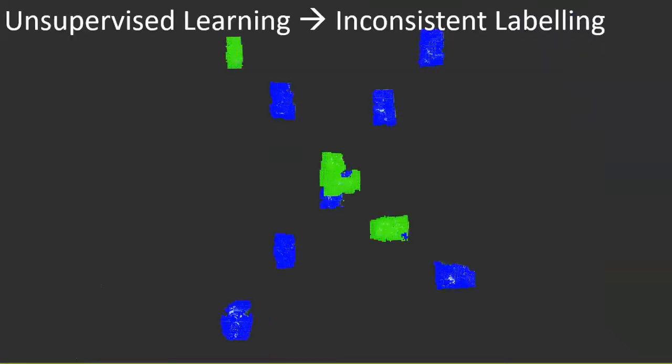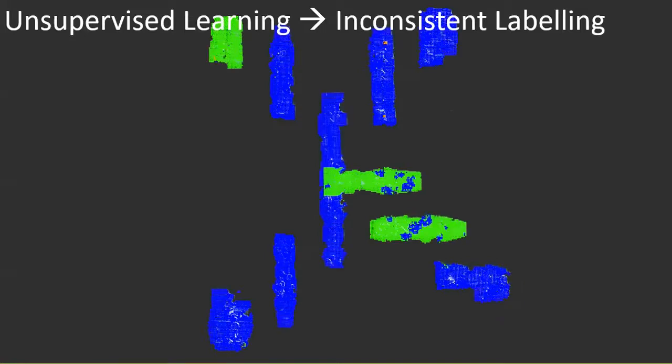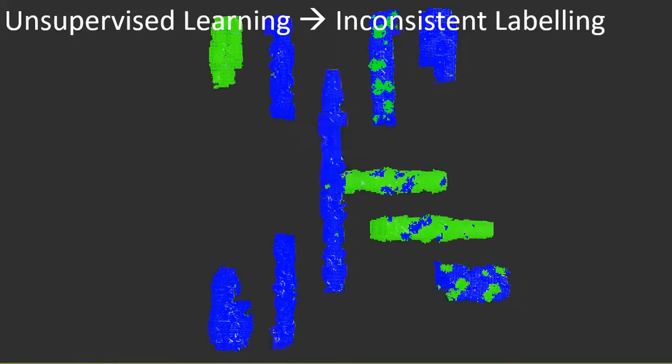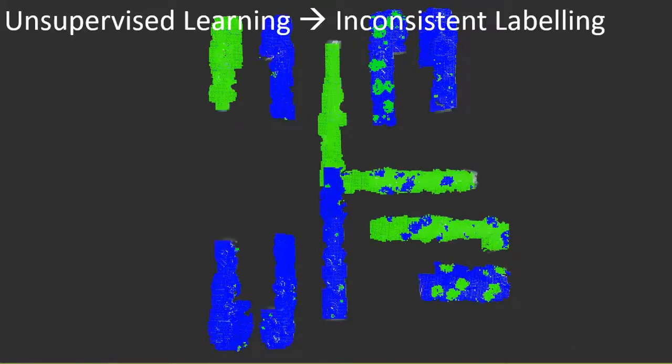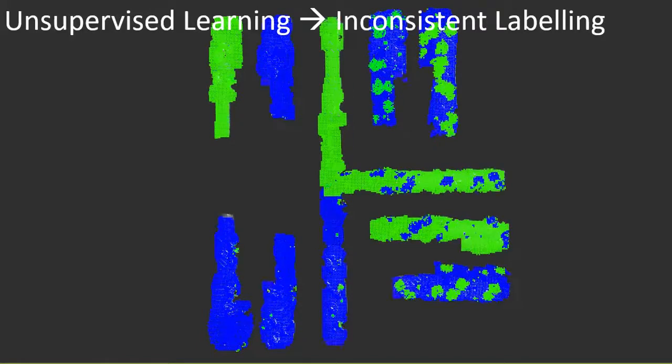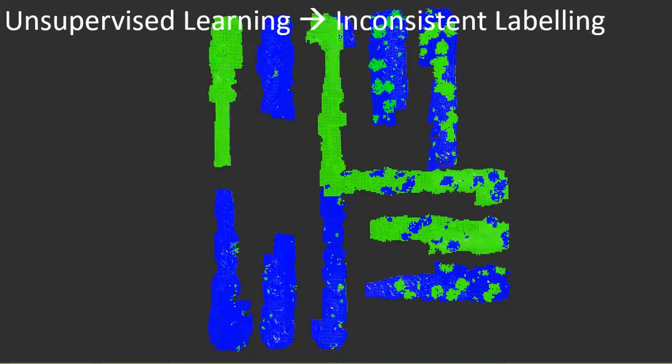But if different robots see different classes, or the same classes in a different order, these topic labels will be used inconsistently between robots. This means multiple robots might be using the same topic label for different things, or different topic labels for the same thing. This problem is particularly challenging to solve in a large robot team.